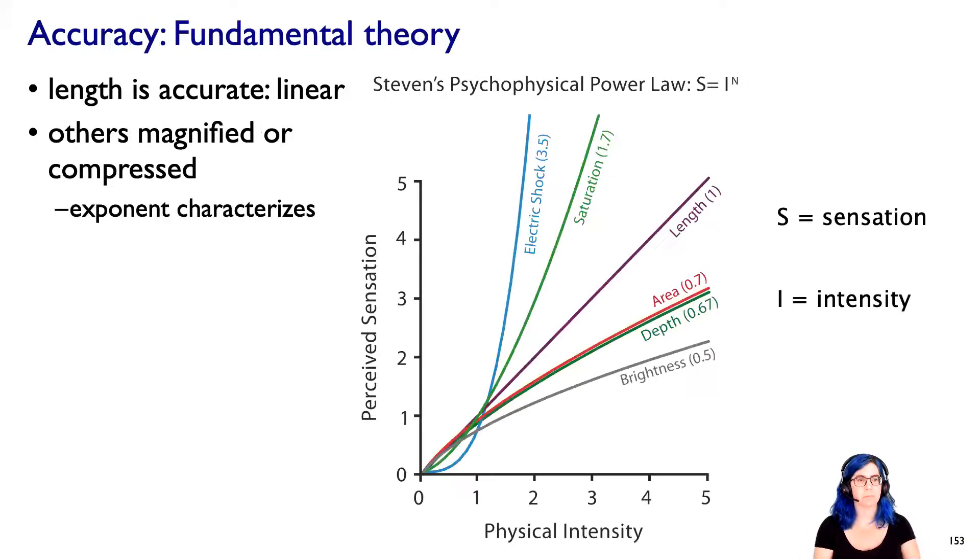So let's go through these four. So with accuracy, there have been many, many decades of psychophysical experiments, where psychophysics is the study of how to measure perceptual phenomena. And what SS Stevens came up with after decades of work is this idea that there is a psychophysical power law, that the sensation that humans have has some power law relationship to the intensity of the stimulus.